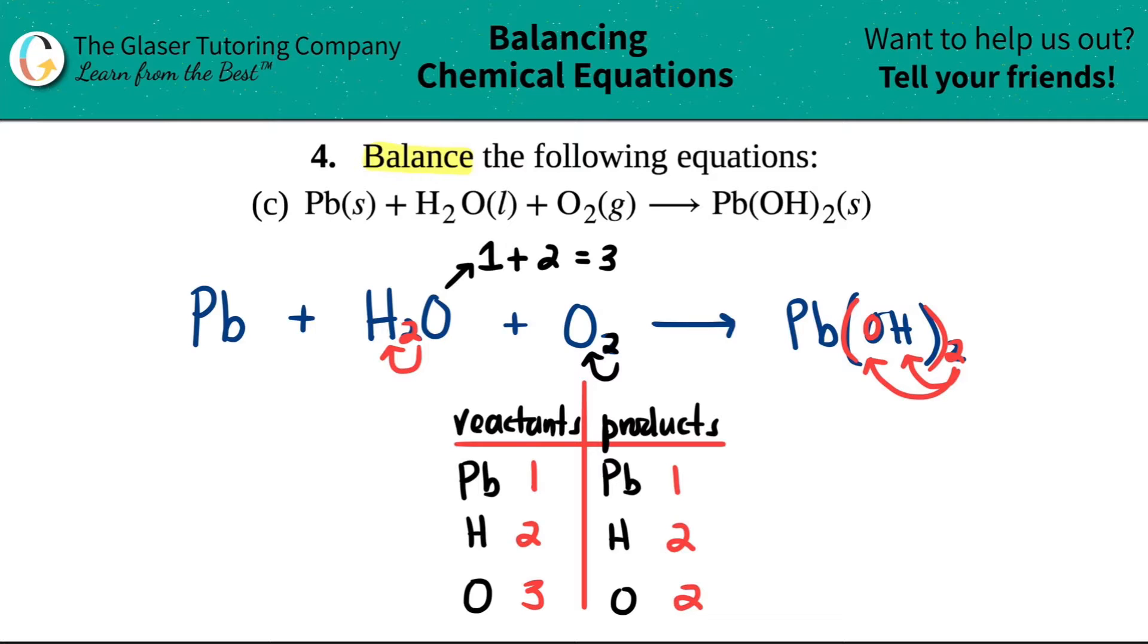Now let's try to balance. Looking at this, it looks like I have the same number of Pbs and the same number of hydrogens. The oxygens are a little messed up—they need to be balanced. Can I multiply two by any number, a whole number, to get to three? Not really, right?